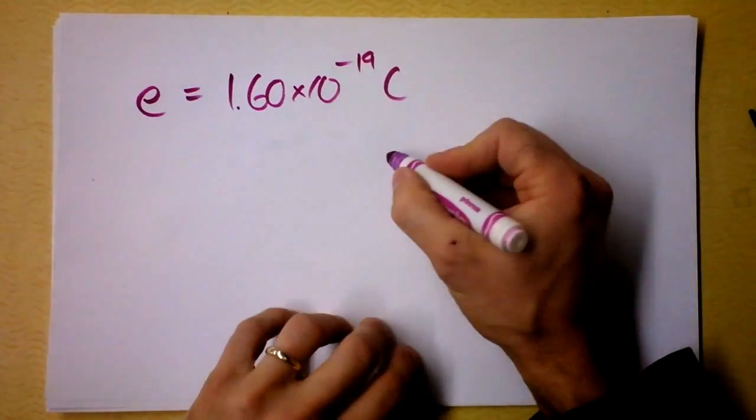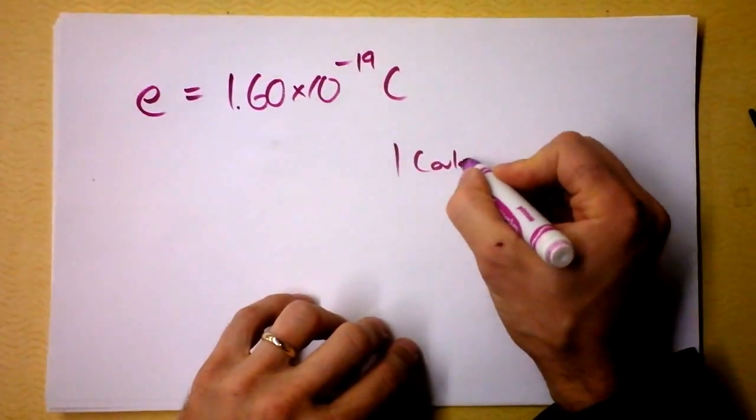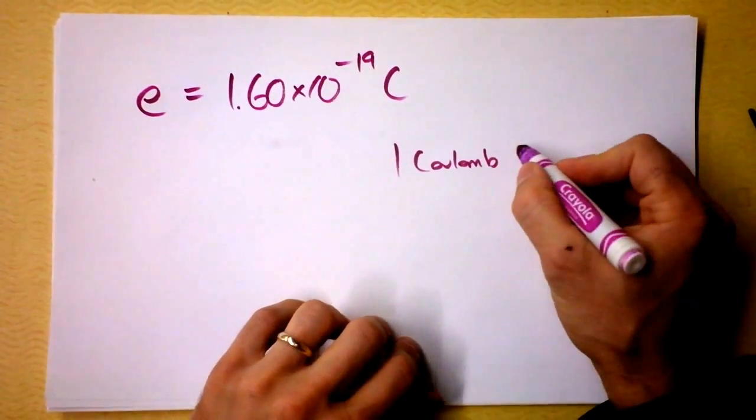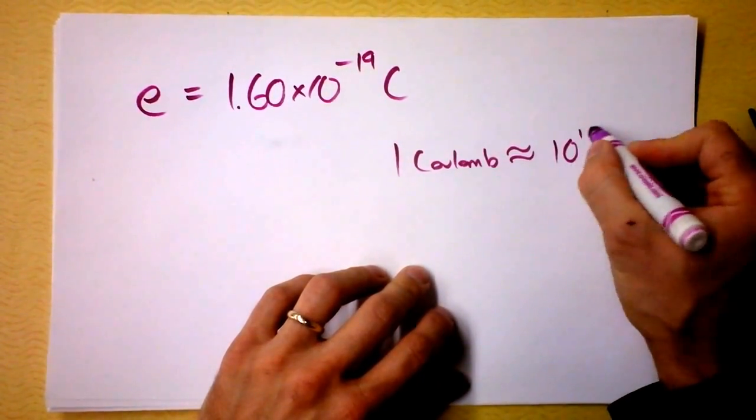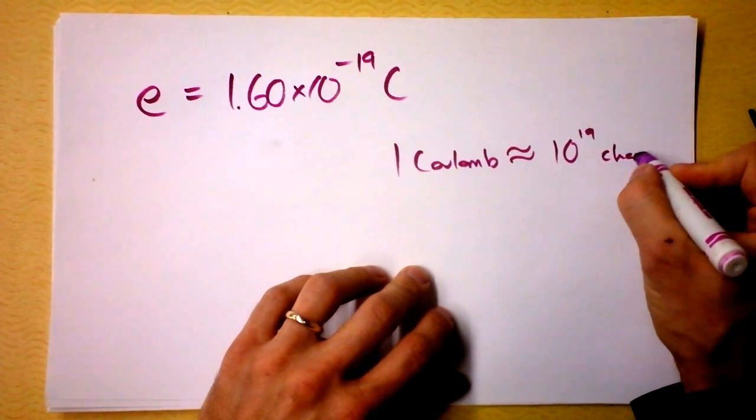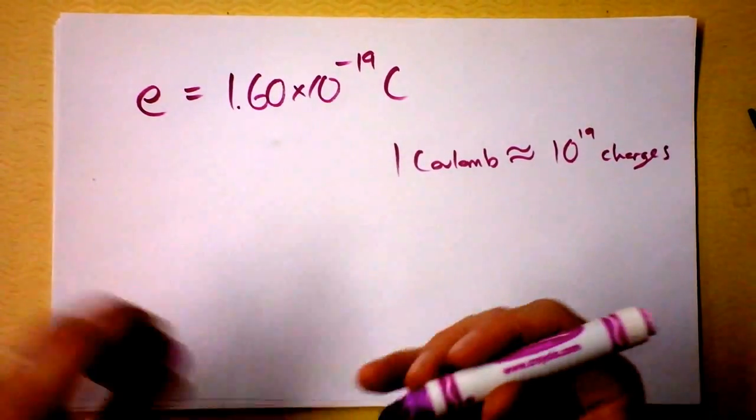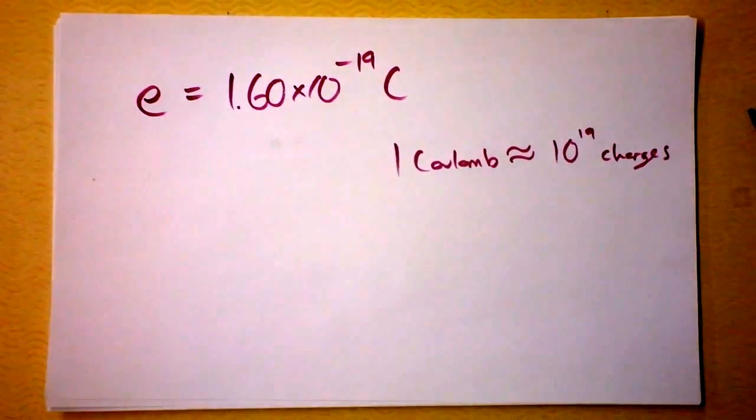Check this out. A coulomb? Wow. One coulomb is an enormous unit. It probably involves something like 10 to the 19th charges altogether. And if you find that the structure of an atom...